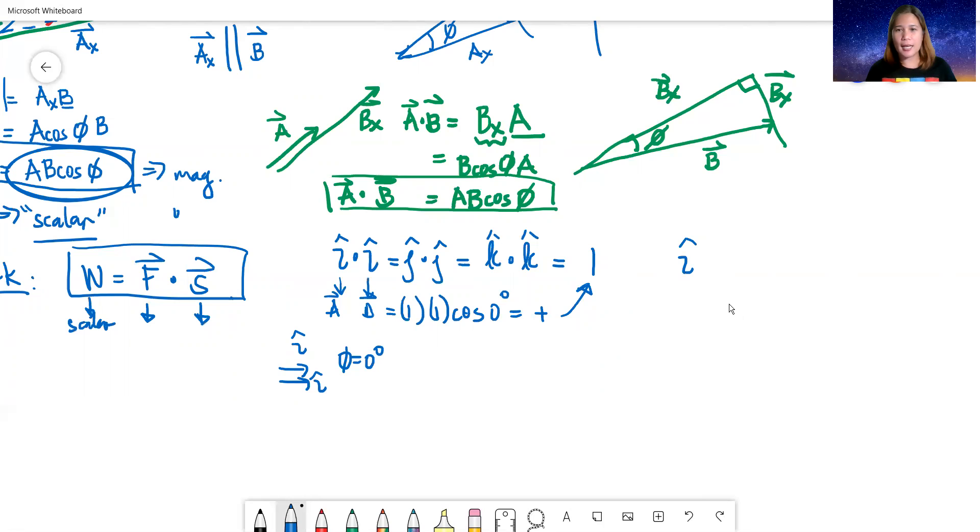What if it's i-hat dot negative i-hat? This positive i-hat going right, tail to tail with negative i-hat on the other side. What's the angle between them? If you make a straight line, this is 180 degrees. So this becomes magnitude of the first vector is just 1, magnitude of the second vector is also 1, and then you have the cosine of the angle between them. Cosine 180 is negative 1. So the answer here is negative 1.